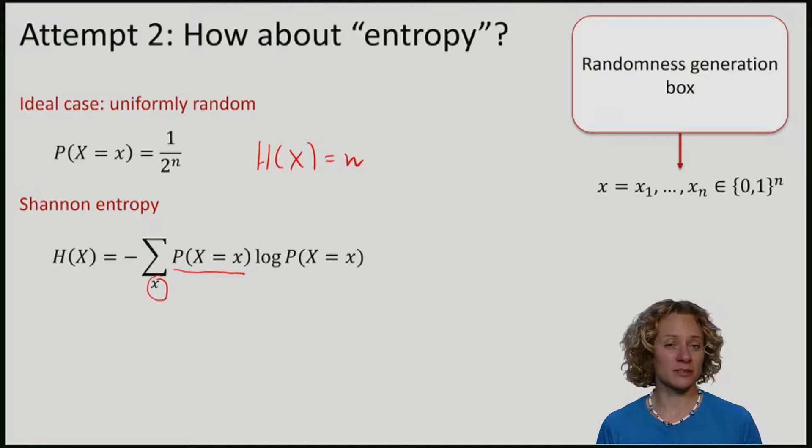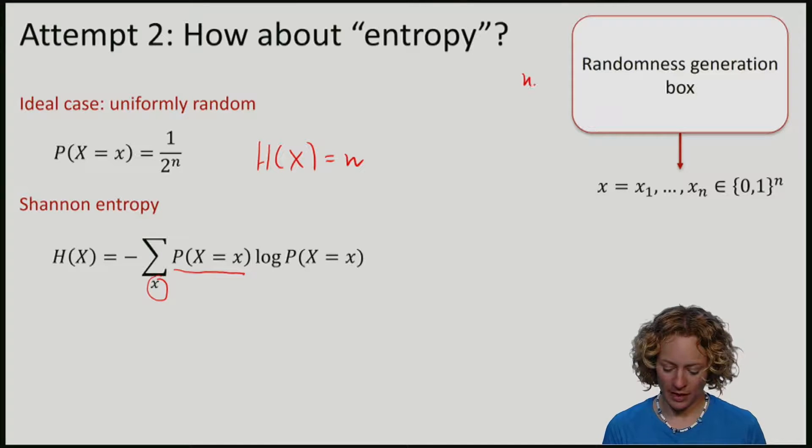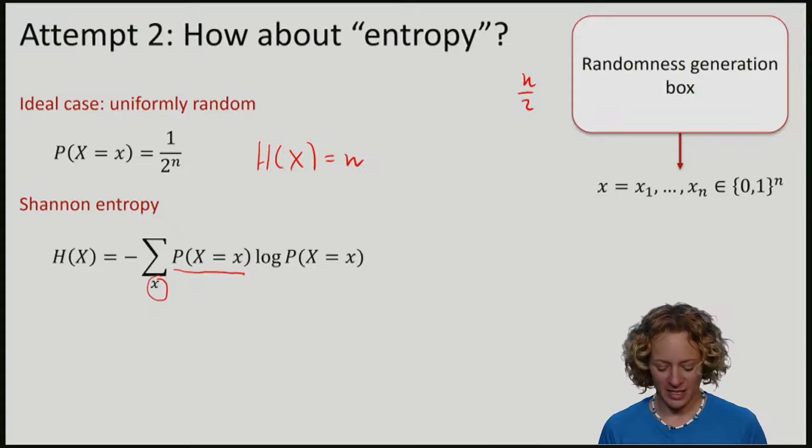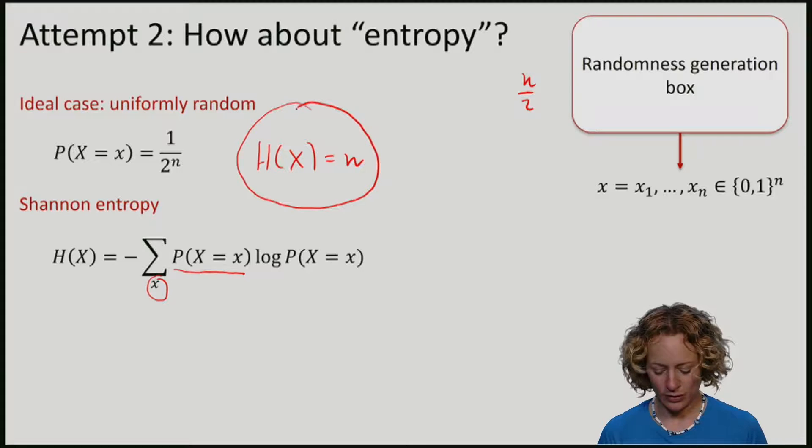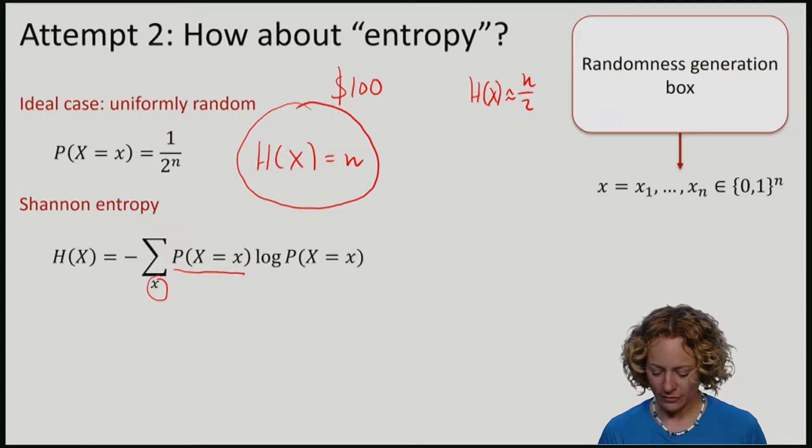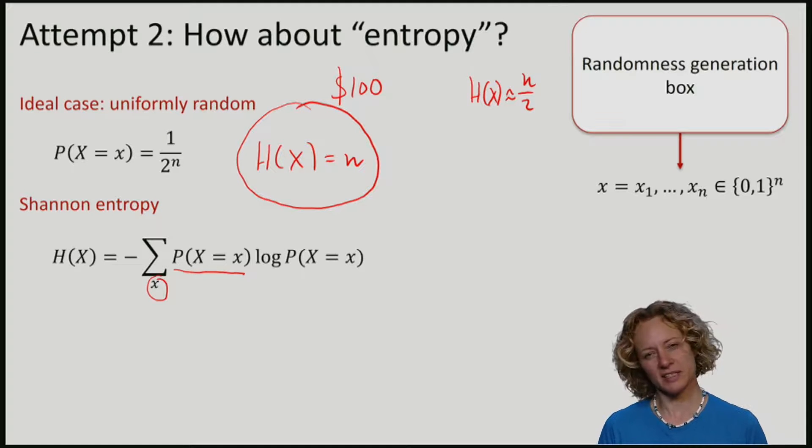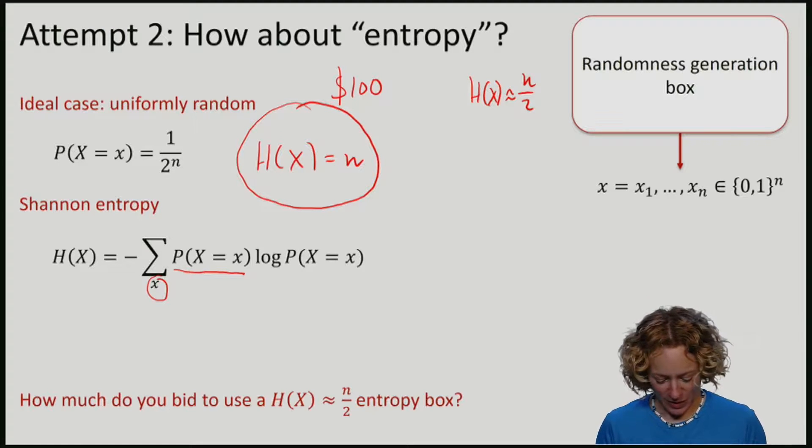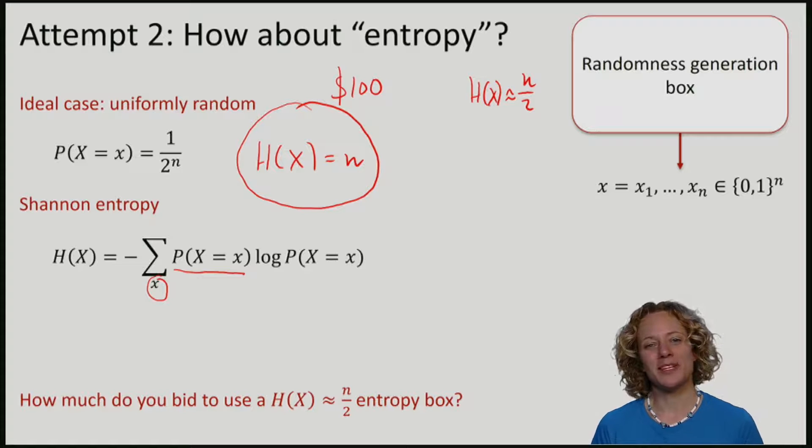In the sense that if I have a box that still has maybe entropy n over 2, this would be very useful. Imagine that my perfect box that has entropy equal to n costs a hundred dollars. And let's say that I have another box for sale which has roughly half that many bits of entropy. That's still decently large, if you think of n being huge, n can be a billion. So even my imperfect box has plenty of entropy. So my question to you is now, what would you bid for my box that has entropy n over 2?